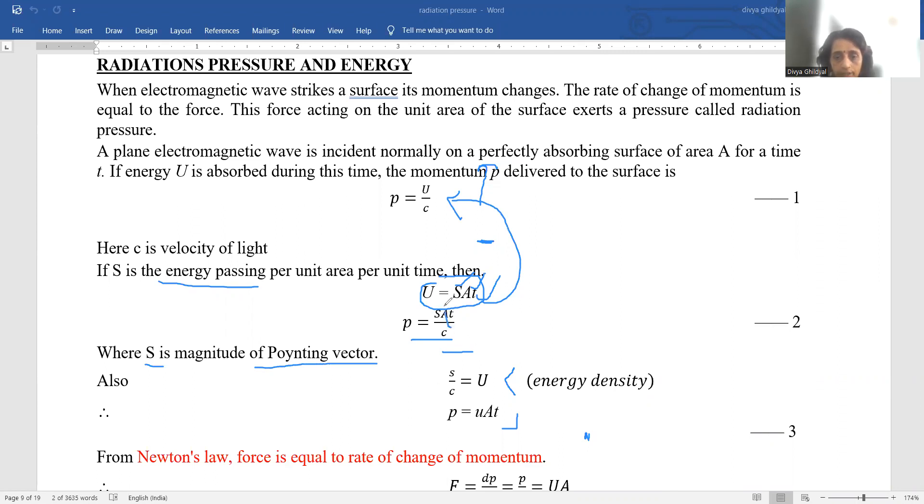So putting this value of u where s is the energy per unit area per unit time in this expression above we get p equal to s a t upon c where s is the magnitude of pointing vector. So s upon c this quantity becomes equal to energy density and p becomes equal to u a t where u is energy density a area and t the time.